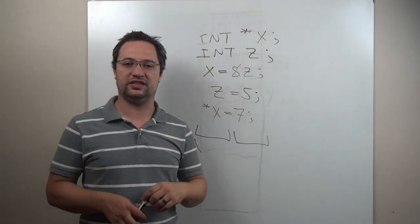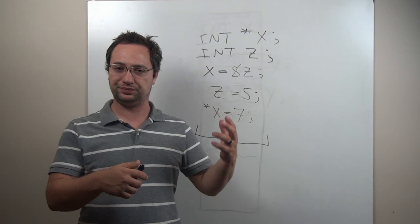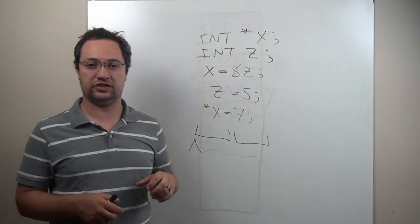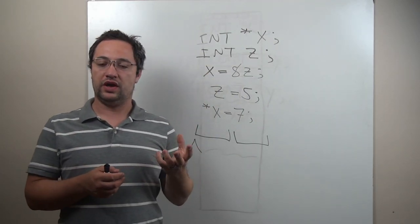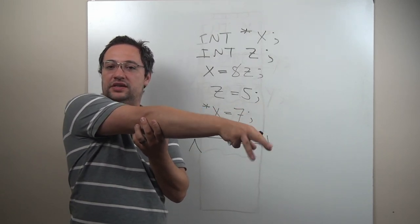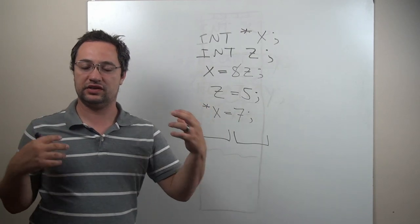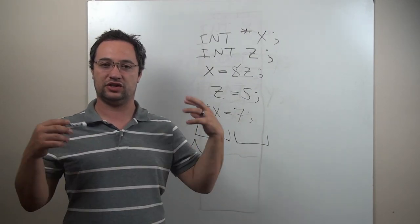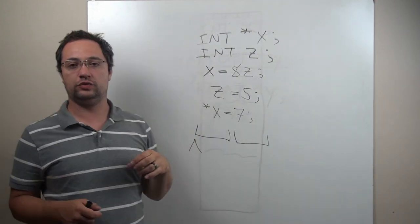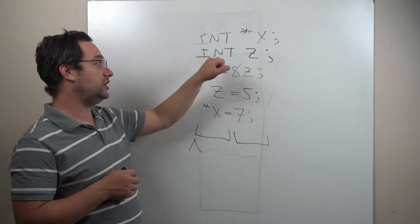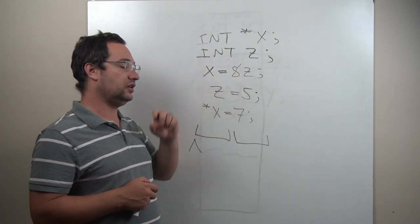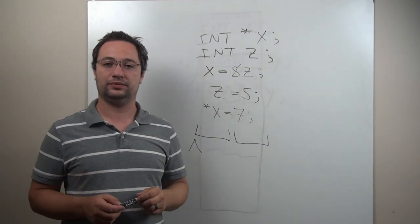A different way to think about it is if you've ever played Portal. By storing the address in x, you create a portal and you can reach through the x portal and manipulate z on the other side. It allows x to masquerade as any other integer, as long as you store the address of that integer in x.